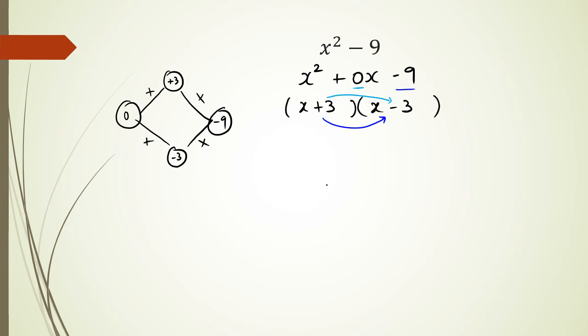So, and again, this goes back to the idea of knowing your square numbers. So if I give you an example like this, x squared minus 49, I know that 49 is 7 squared. So I can factorize this as x minus 7, and x plus 7.